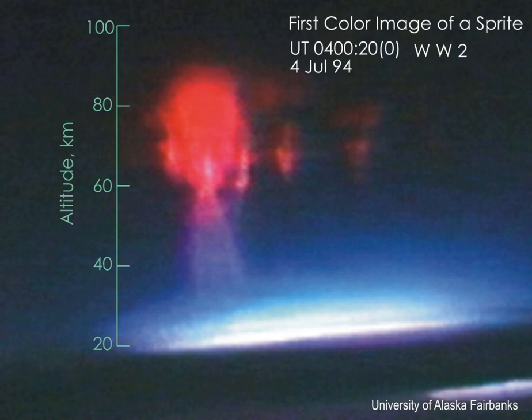Sprites, or red sprites, are large-scale electrical discharges that occur high above thunderstorm clouds, or cumulonimbus, giving rise to a quite varied range of visual shapes flickering in the night sky. They are usually triggered by the discharges of positive lightning between an underlying thundercloud and the ground. Sprites appear as luminous reddish-orange flashes. They often occur in clusters above the troposphere at an altitude range of 50 to 90 kilometers (31 to 56 miles).